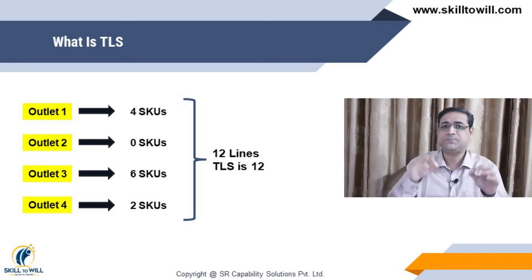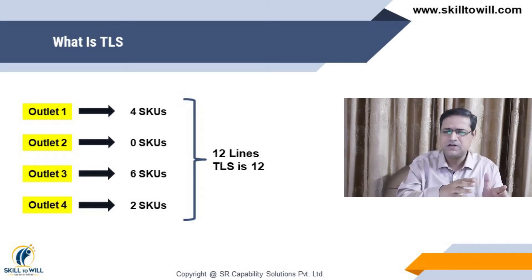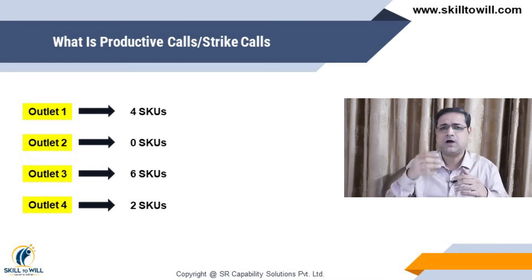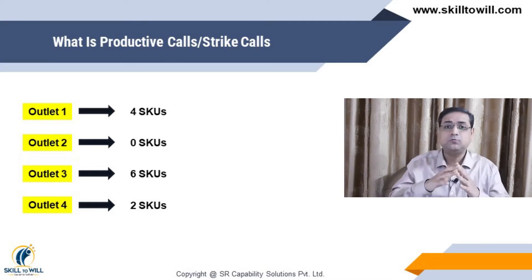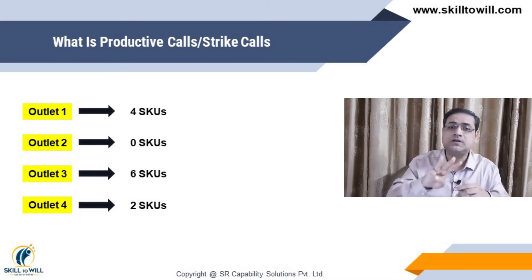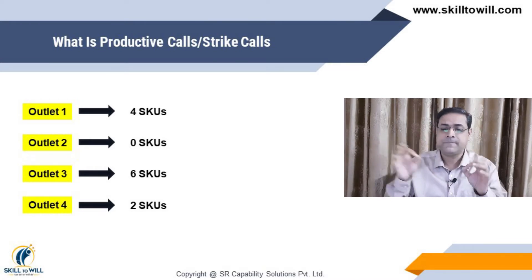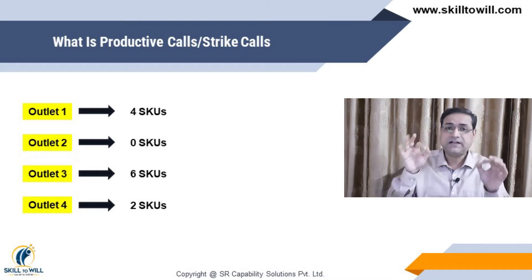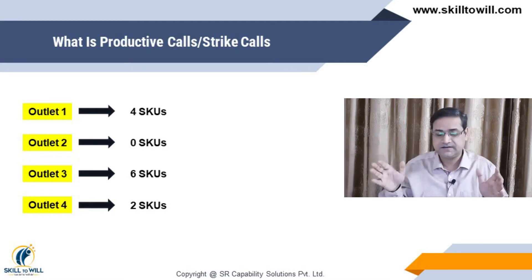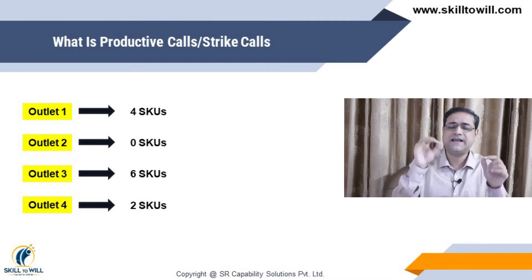The other term linked to this is productivity, which is related to productive calls and bills cut. In this particular case there are 4 stores visited, giving a productivity of 75%.